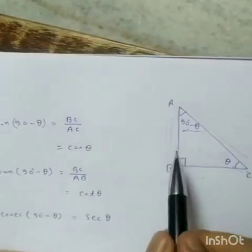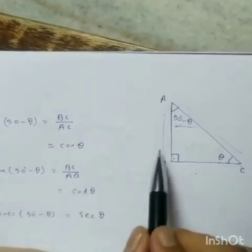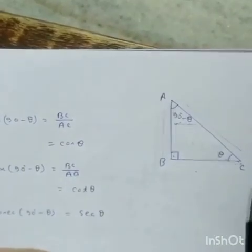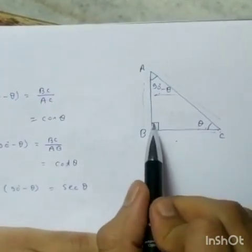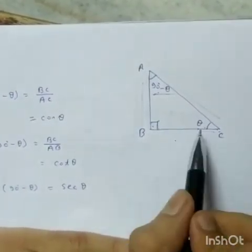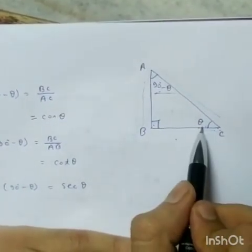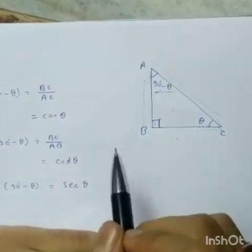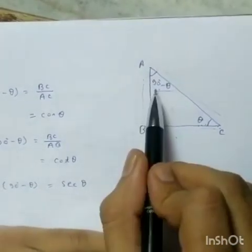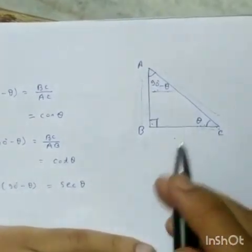We have shown this triangle is ABC. The angle at A means angle A equals 90 degrees minus theta.